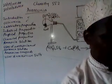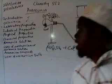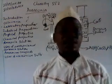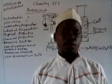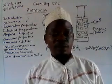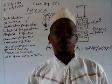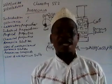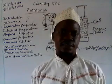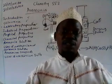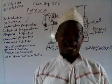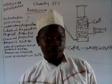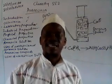The next section is the industrial preparation of ammonia. Ammonia is prepared in the industry by the Haber process, which involves the direct combination of nitrogen and hydrogen. One part of nitrogen to three parts of hydrogen are mixed together in moles and passed over a finely divided iron catalyst.